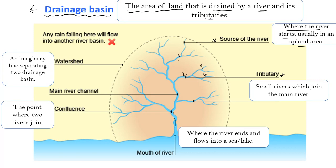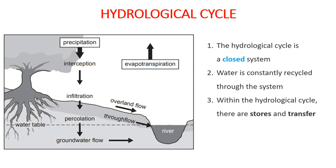Where two rivers meet is referred to as the confluence. A watershed is an imaginary line that separates two individual drainage basins. The mouth of a river is where the river ends and flows into a lake or a sea.